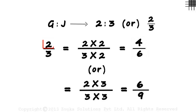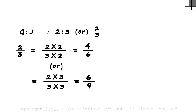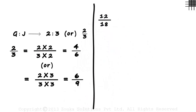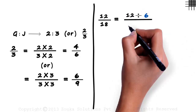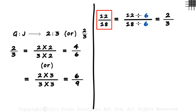Even if we divide the numerator and the denominator by the same value, the ratio remains unchanged. Let's consider the ratio 12 by 18. We can divide the numerator as well as the denominator by 6. The numerator will be 12 by 6 and the denominator will be 18 by 6. 12 by 6 is 2 and 18 by 6 is 3, so 12 by 18 and 2 by 3 are the same.